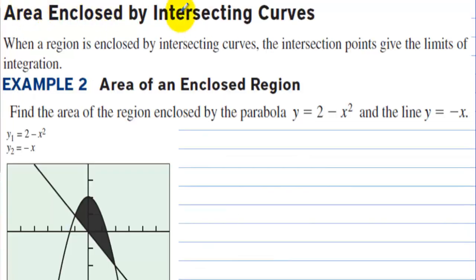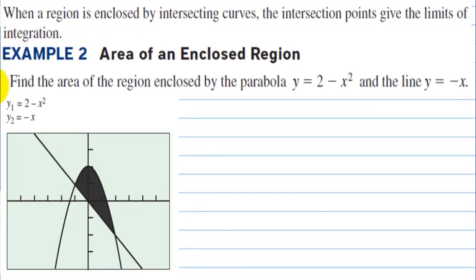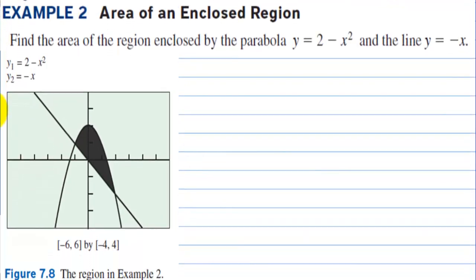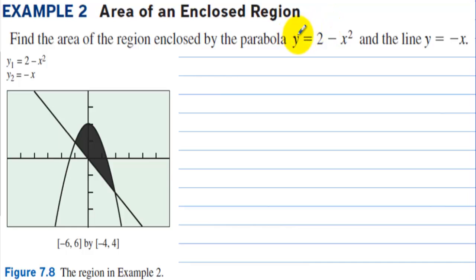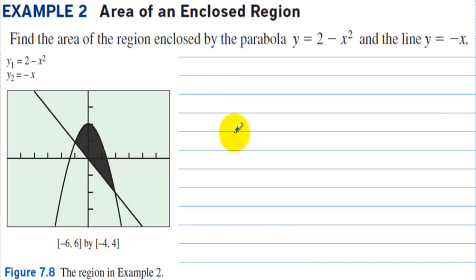Area enclosed by intersecting curves: when a region is enclosed by intersecting curves, the intersection points give the limits of integration. Find the area of the region enclosed by the parabola y = 2 − x² and the line y = −x. We need to find where these two graphs intersect — there's the parabola and the line.